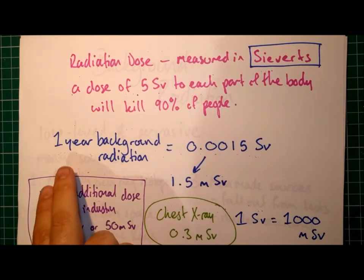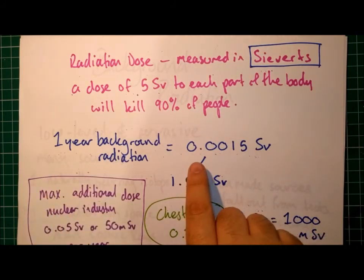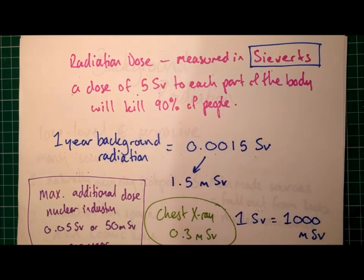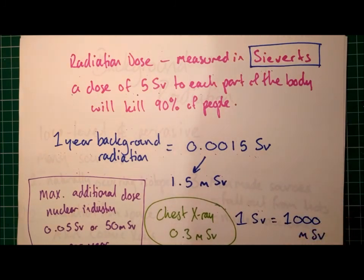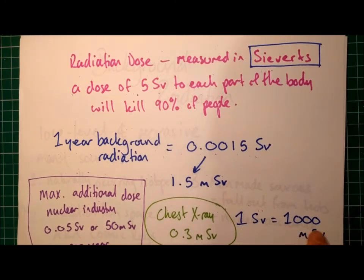On a lighter note, one year of background radiation only makes up 0.0015 sieverts. Because it's such a small number, it's very commonly quoted in millisieverts instead — so 1.5 millisieverts. It's important that you remember that one sievert consists of 1,000 millisieverts, and one millisievert is one thousandth of a sievert.